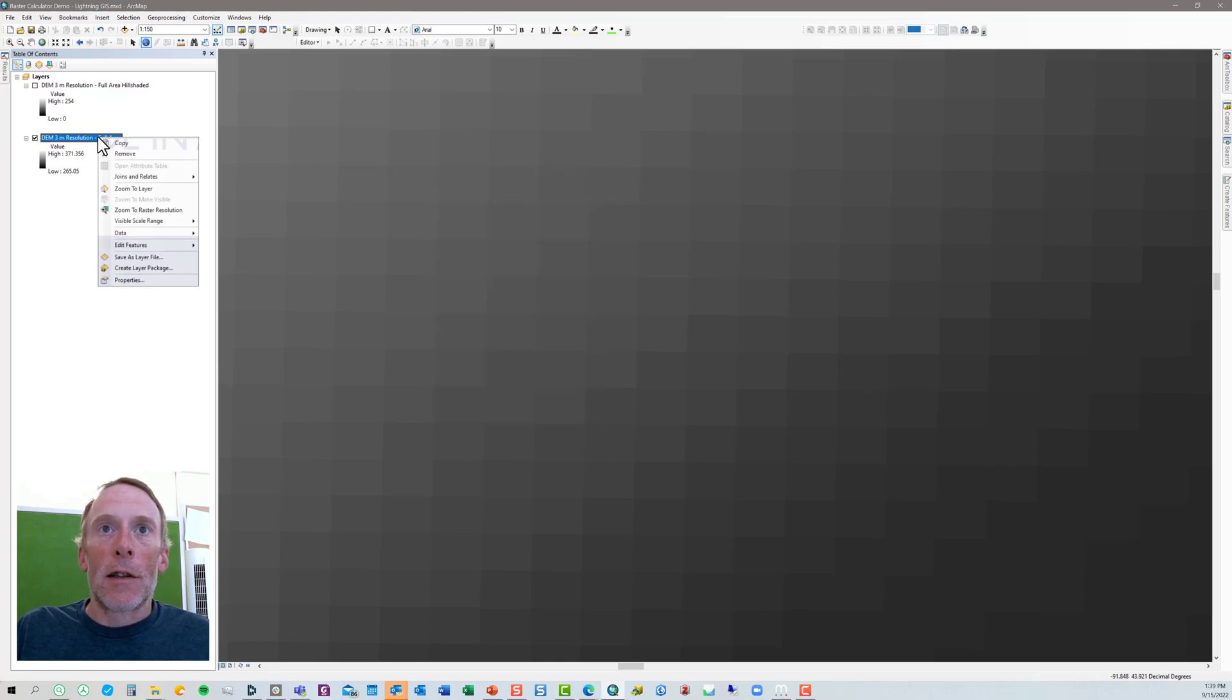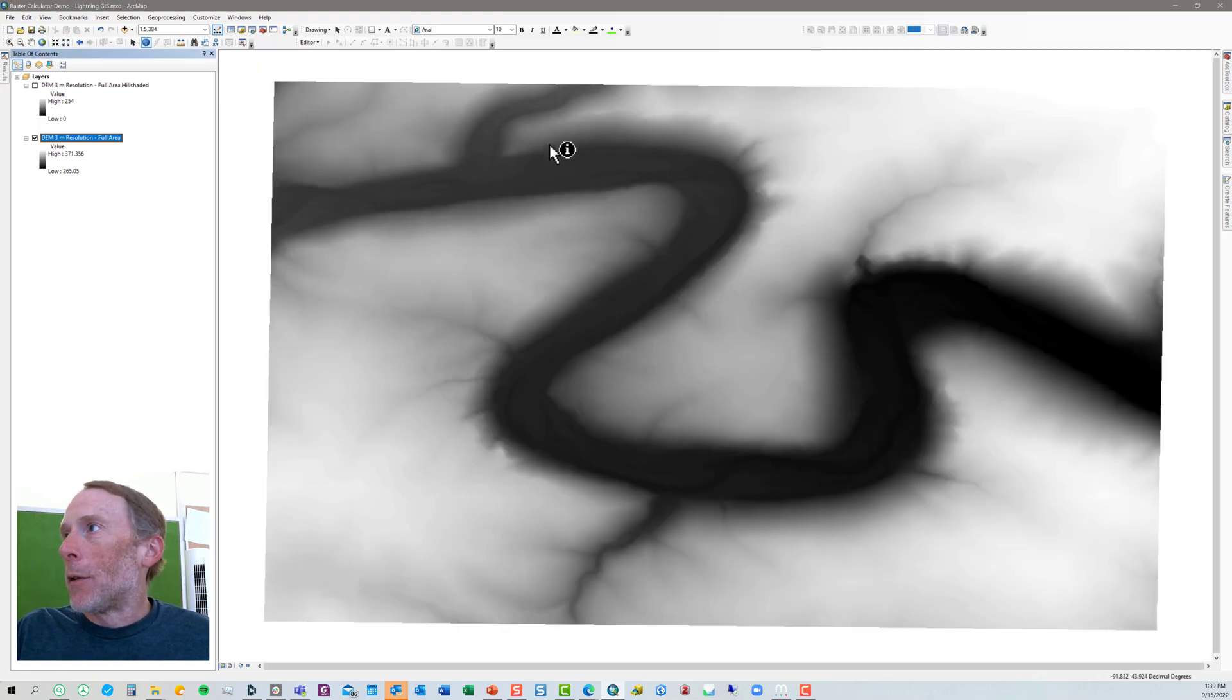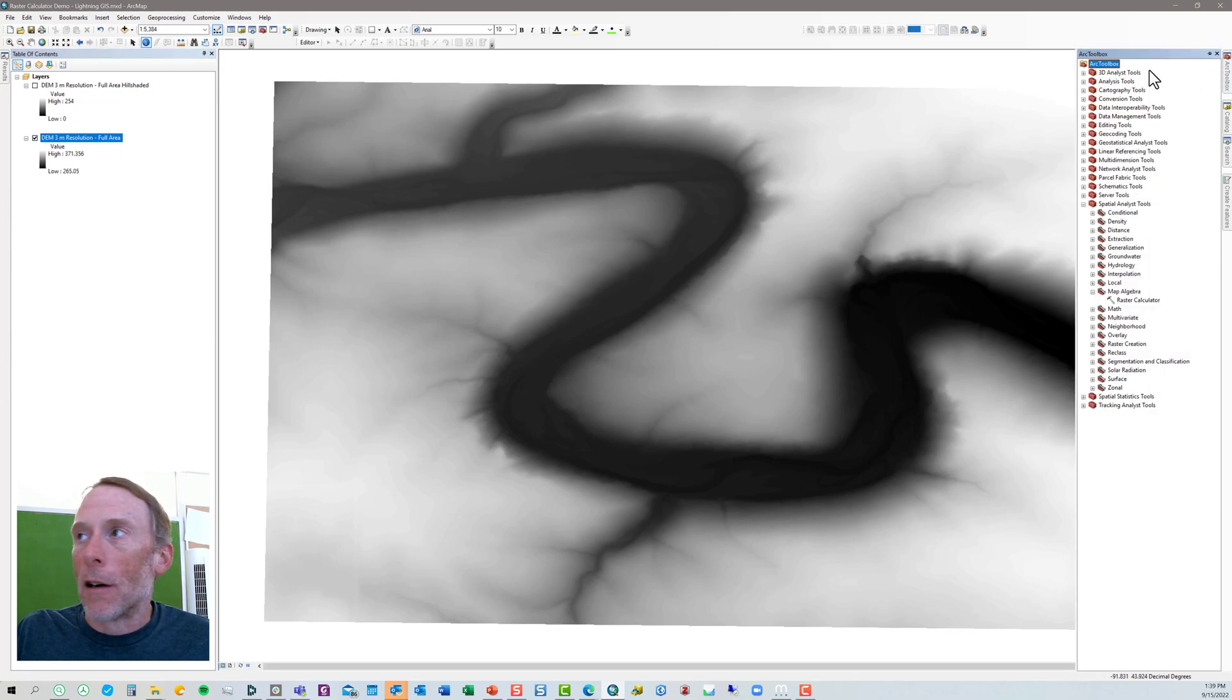All right, so let's zoom back out here and what we need to do is open up the raster calculator. You can find the raster calculator in our toolbox. It's in the spatial analyst tools under map algebra and there's the raster calculator tool. So let's open that up.